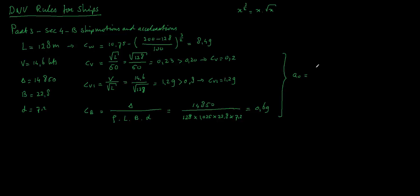We have 3 times block coefficient (Cb) divided by the length, added by Cv times Cv1. Put the numbers in: it's 3 times 0.69 divided by 128, added by Cv which is 0.2 times 1.29, and gives us something like 0.46.